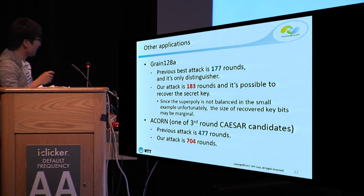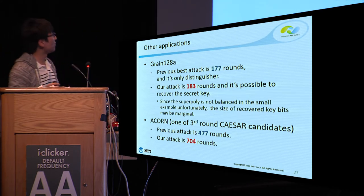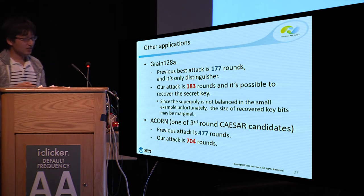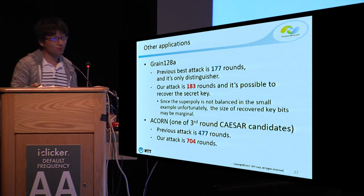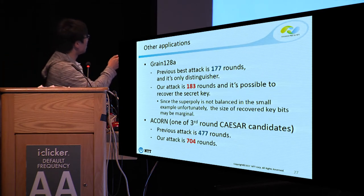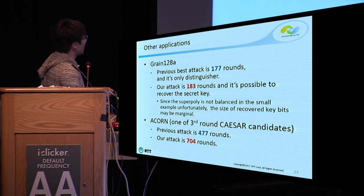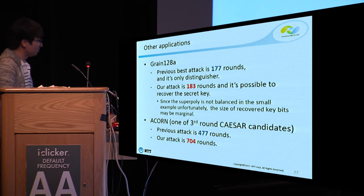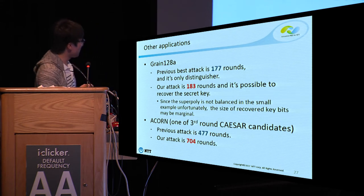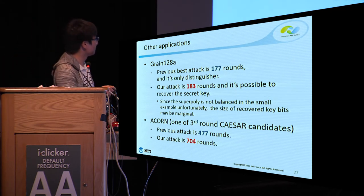I also applied this technique to Grain128A and ACORN. Grain128A was already broken by the dynamic cube attack, but Grain128A had survived. The previous best attack was 177 rounds and only a distinguisher, but our attack reaches 183 rounds and is possible to recover the secret key. In the case of ACORN, which is one of the third-round CAESAR candidates, the previous cube attack covered 477 rounds, but our attack breaks 704 rounds.